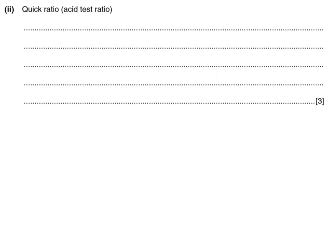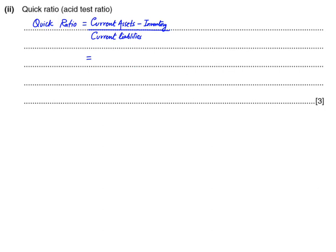After current ratio we calculate quick ratio. The formula for quick ratio is current assets minus closing inventory divided by current liabilities. If we deduct inventory from current assets we are left with quick assets. Quick assets are current assets that do not include inventory — those quickly converted into cash. If you have cash it is already in cash form; bank balance can be withdrawn anytime; trade receivables will sooner or later pay. So these are all liquid assets, whereas inventory is illiquid because it takes time to sell.